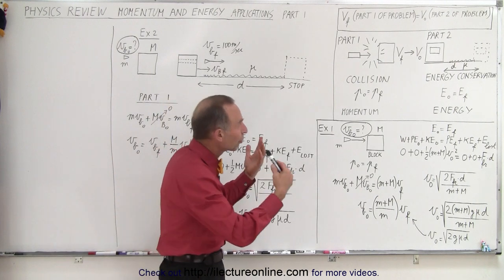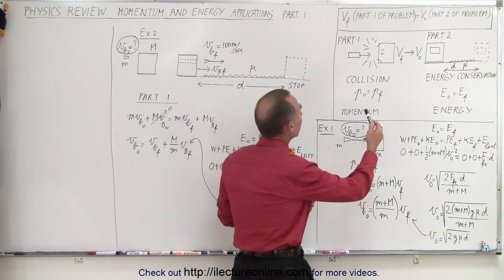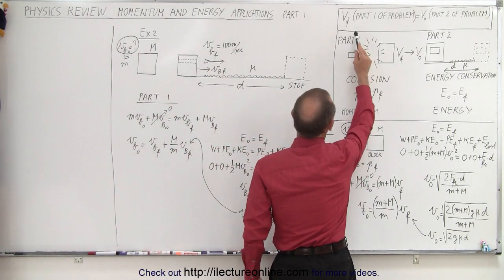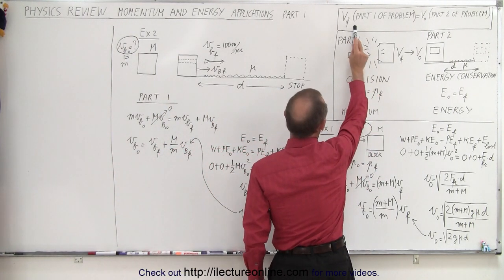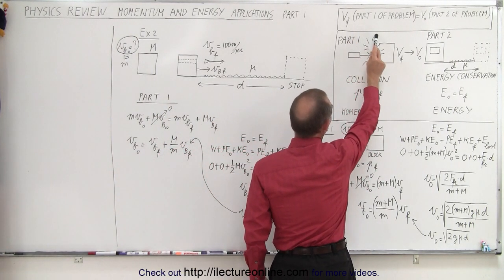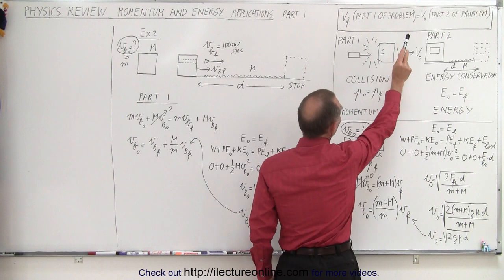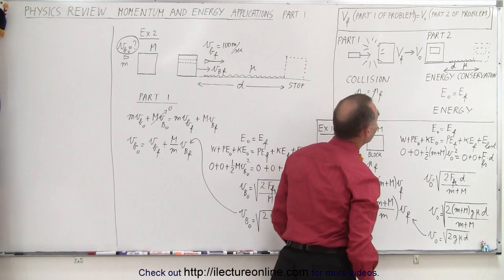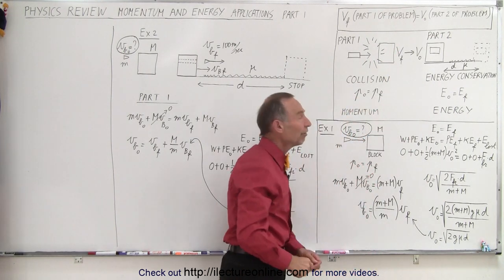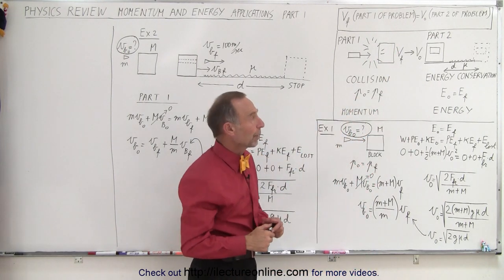I've tried to cryptically illustrate that: the final velocity of part one of the problem becomes the initial velocity of part two of the problem.